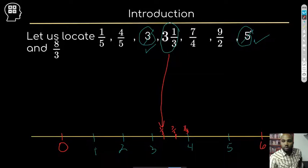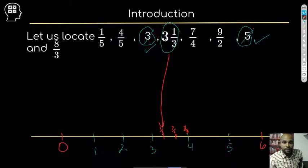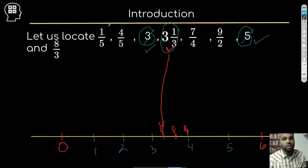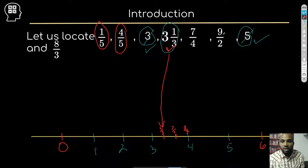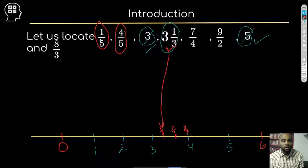The next easiest ones to deal with are the proper fractions — those are the ones where the numerator is less than the denominator. So we're going to look at one fifth and four fifths. As a proper fraction, I know it's going to be between zero and one. We're taking a unit and dividing it into five pieces, and taking one fifth of that piece.